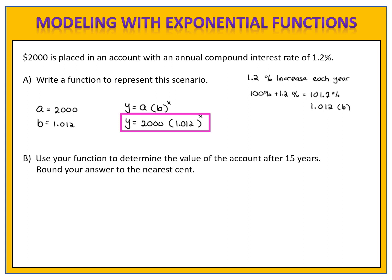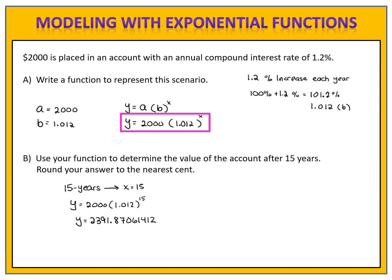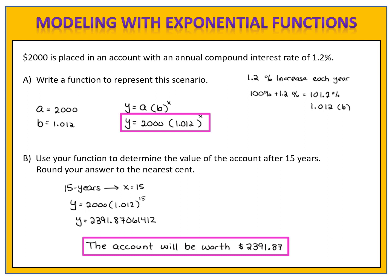In part b, we want to use the function to determine the value of the account after 15 years. Please pause the video and see if you can determine that amount. We want to know the value after 15 years, so x is 15. We substitute 15 in place of x and evaluate 2,000 times 1.012 to the 15th power on our calculator. The problem says to round to the nearest cent, so the account will be worth $2,391.87 at the end of 15 years.